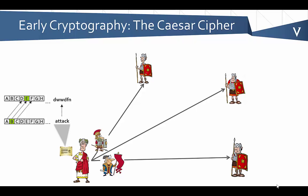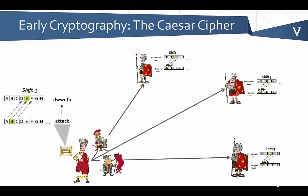Effectively what he was doing is he was shifting three, so to each of his field generals, he would just need to tell them to shift in the opposite direction when you receive this message so you can decipher the message.